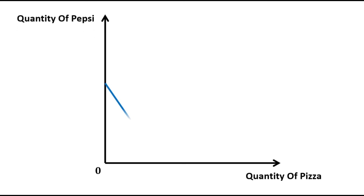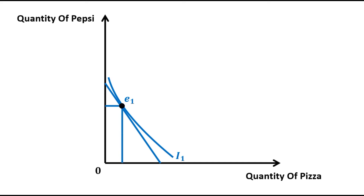Now again we have two axes — quantity of pizza on the horizontal axis and quantity of Pepsi on the vertical axis. This is the initial budget constraint, and the initial optimum is achieved at point E1. With an increase in income, the budget constraint will shift outward.